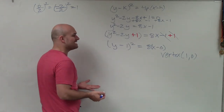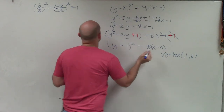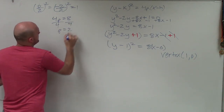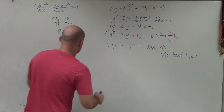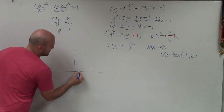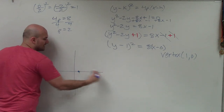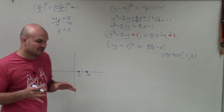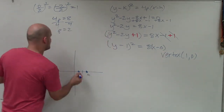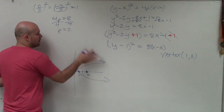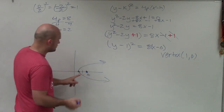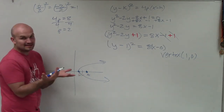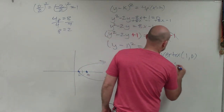To identify p, I set 4p equal to 8, so p equals 2. Since p is positive, I'm going to go to the right — if p were negative, I would go to the left. My vertex is at (0, 1), and since p is 2, I go 2 units to the right for the focus. The parabola opens toward the focus, with a horizontal axis of symmetry. The focus has the same y-coordinate as the vertex, so the focus is at (2, 1) — wait, 2 units to the right of the vertex.